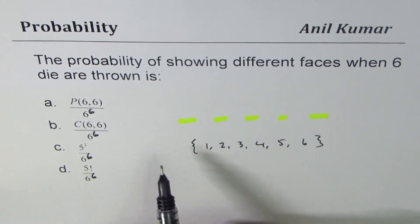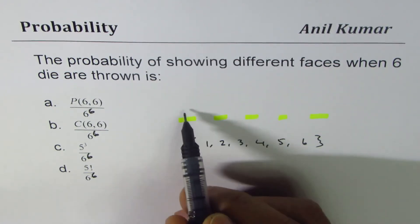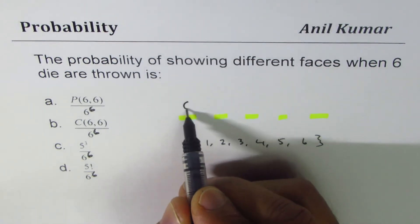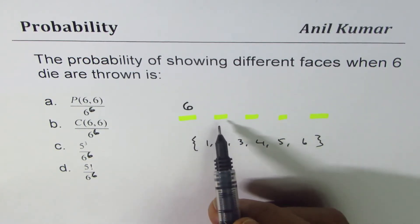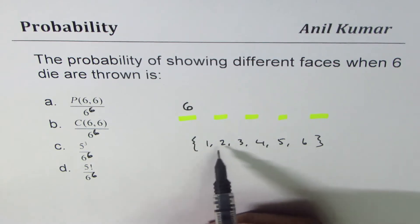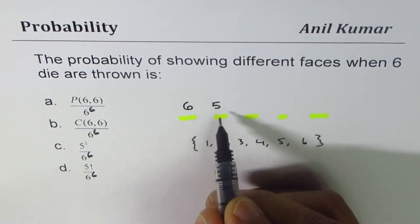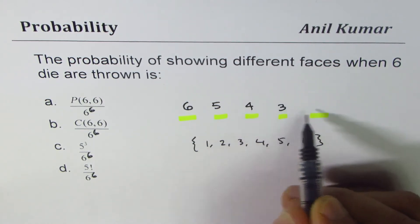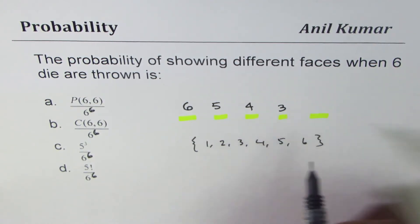As far as the numerator is concerned, we have to get different numbers, right? So in the first position you could get any one of these six, so we have six options here. In the second position, once you have taken a number, you are left with five, so there are five options. And when two are taken away, you're left with four.